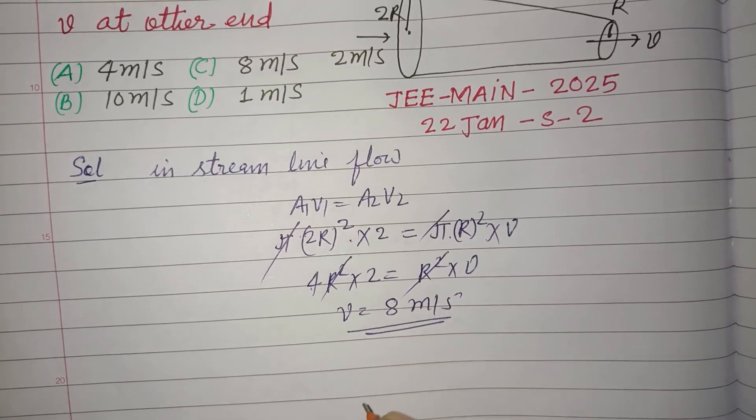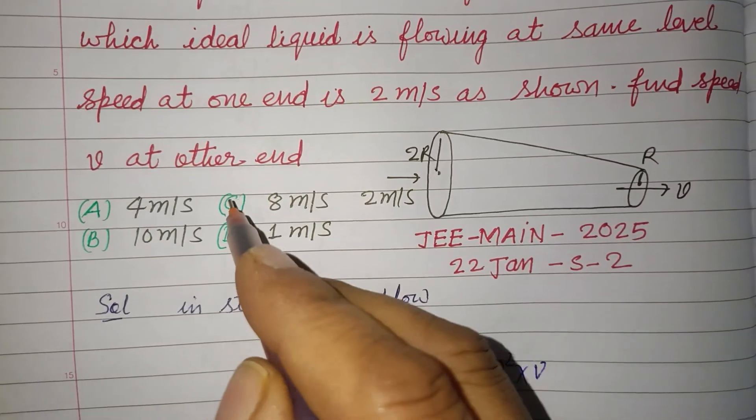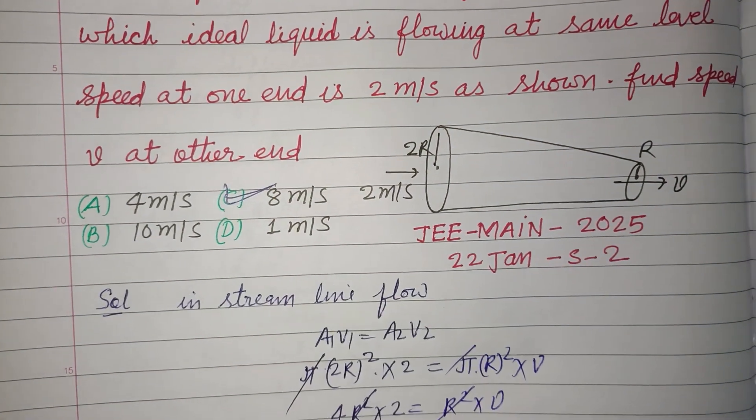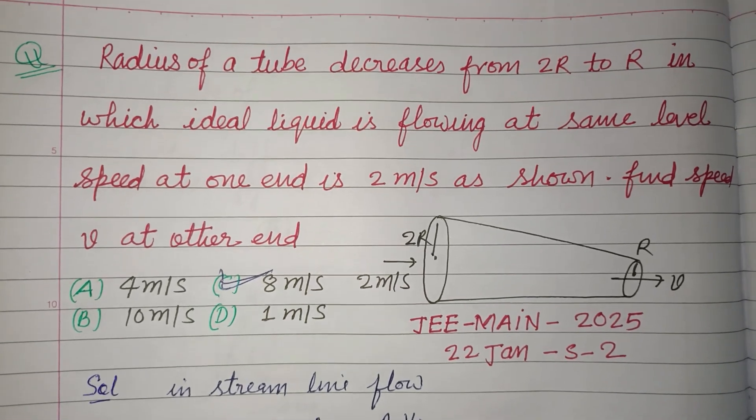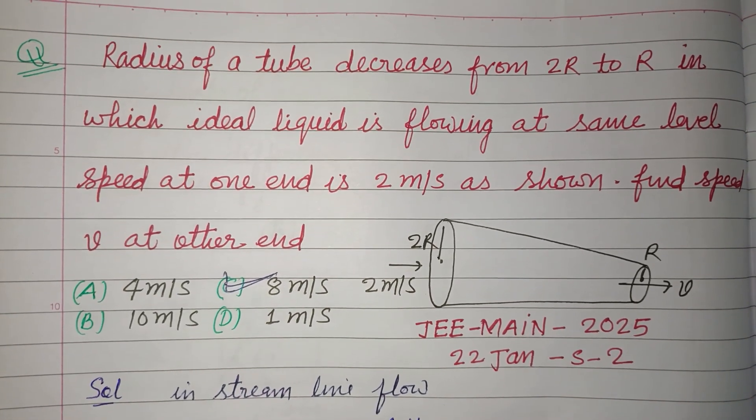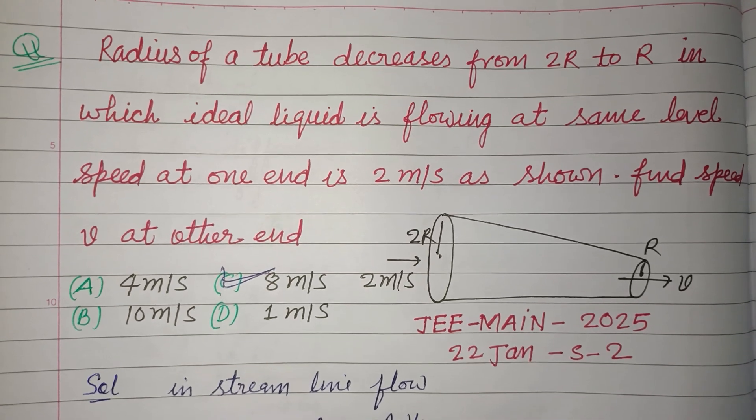So velocity at the other end is 8 meter per second, which is found in option C. Option C is correct. I hope you got it. Please like the video and subscribe to the channel for such solution types.